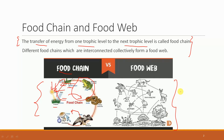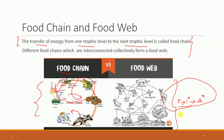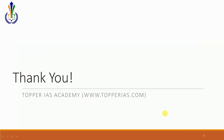Sometimes UPSC has a tendency to ask you to arrange different organisms in a food chain. What is important is that you should be able to identify which will be the producer, which will be the primary consumer, and which will be the secondary consumer. These kinds of questions have been asked in the past and repetition can be expected, so please practice a few such questions. That's about food chain and food web — thank you all for watching.